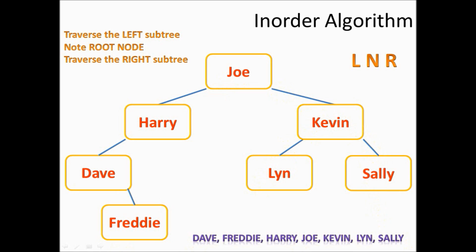The in-order algorithm is written. Traverse the left subtree. Note the root node every time. We've noted all the way down. And we started with Dave. Traverse the right subtree. And there we go. Kevin. Lynn. Sally. With our LNR order.